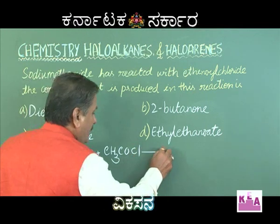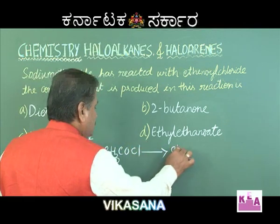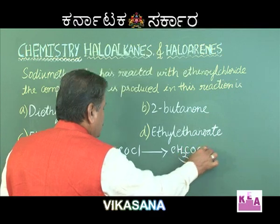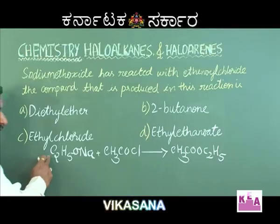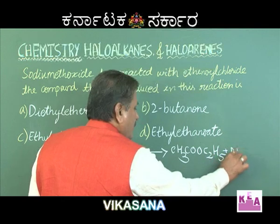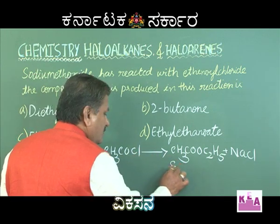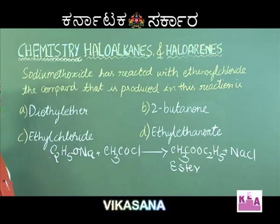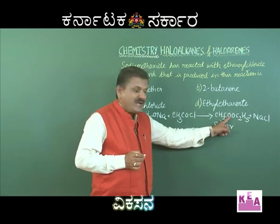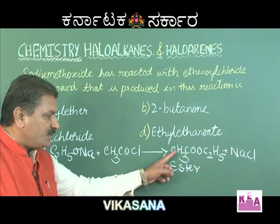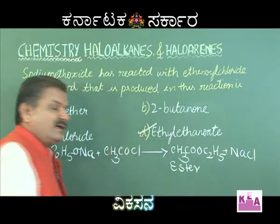The reaction between sodium ethoxide and ethanoyl chloride produces CH3COOC2H5 (an ester) and sodium chloride (NaCl). The ester formed is named ethyl ethanoate in the IUPAC system. Therefore, the correct option is option D: ethyl ethanoate.